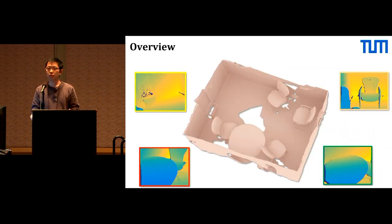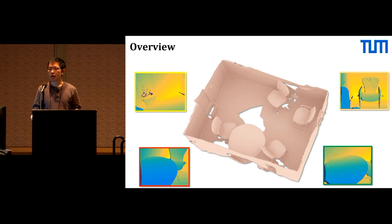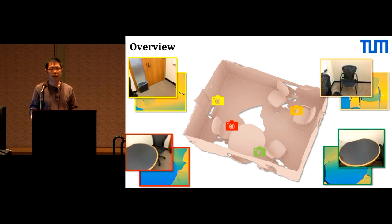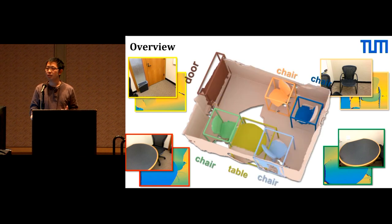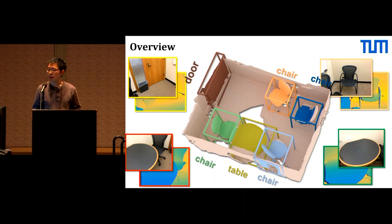We proposed three components. Our input is a 3D scan and the associated RGB images. As output, we predict 3D instance segmentation, which includes 3D bounding boxes, class labels, and per-voxel instance labels called 3D masks.